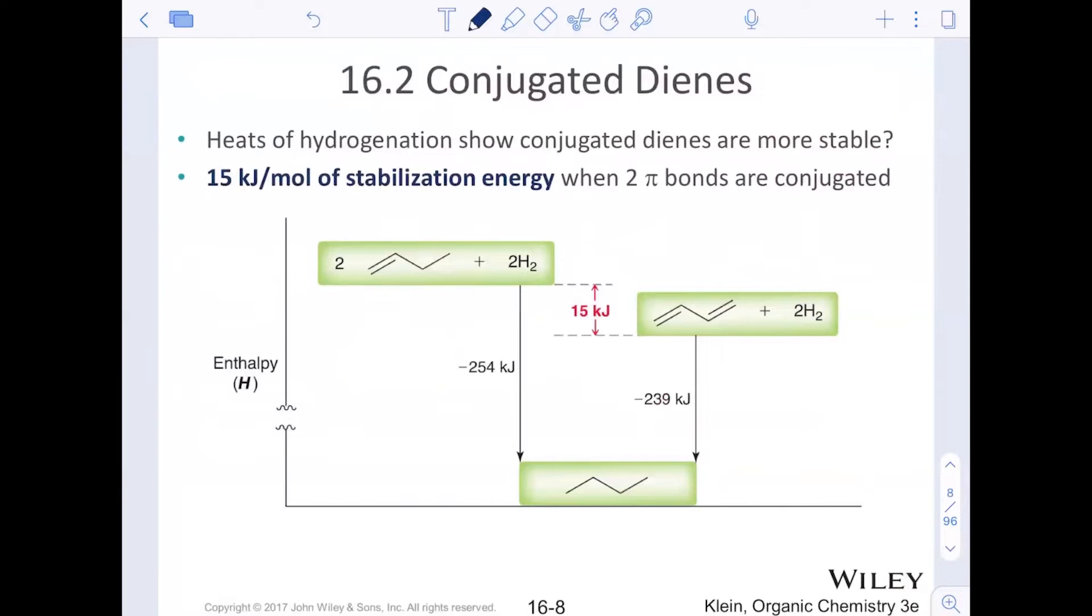We also see that in terms of stability, conjugated dienes are more stable. One pi bond reacting to hydrogenate to form a single bond to add two hydrogens, takes or releases negative 254 kilojoules. If we think about the double bond, we see that there's actually a 15 kilojoule difference. So when hydrogenating two alkenes, two isolated alkenes, it actually releases more energy than two conjugated dienes. And so what that means is that the conjugated system must be lower in energy starting. And so we want to investigate that in terms of why is it more stable? What is it about these dienes that are conjugated? What gives them more stability?